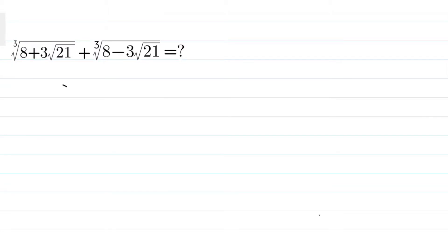Let's assume that a³ equals 8 plus 3√21, and b³ is 8 minus 3√21. Now if you consider this, what happens? We'll get a³ plus b³